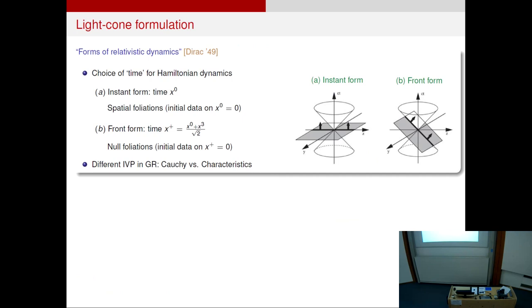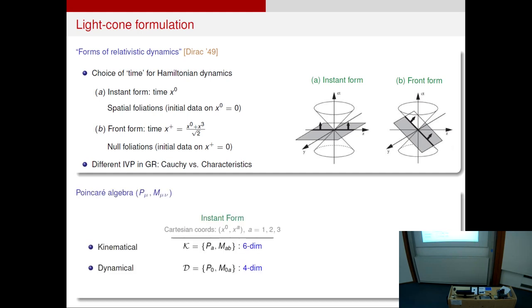And historically, this dates back to the work of Dirac from the Forms of Relativistic Dynamics, the famous paper, where he argued that there are different choices of time coordinate for doing a Hamiltonian analysis for relativistic theories. The usual one is, of course, taking X0 to be the time. Then we have a spatial foliation of our spacetime. But you could also take one of the light cone directions, the X+, to be the time direction. In that case, you have a null foliation of the spacetime. And also in GR, these two correspond to qualitatively different initial value problems. So this one is the Cauchy problem, and this one would be characteristic initial value problem. And the key point that Dirac wanted to emphasize in this paper is that depending on how you choose your time coordinate, your Poincaré Algebra might have a slightly different form.